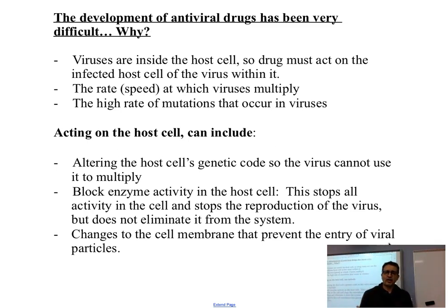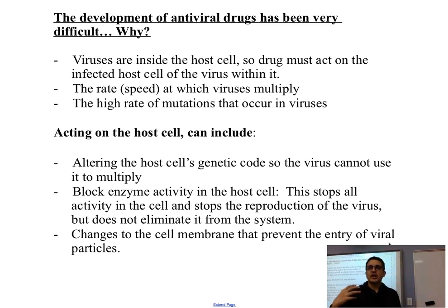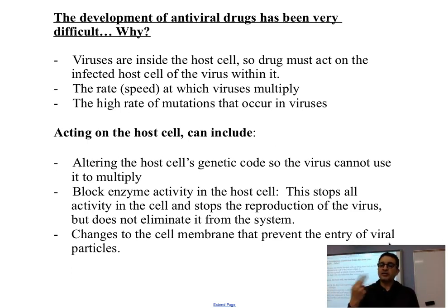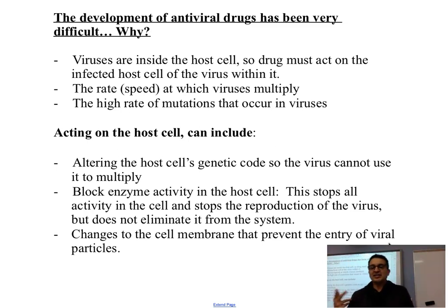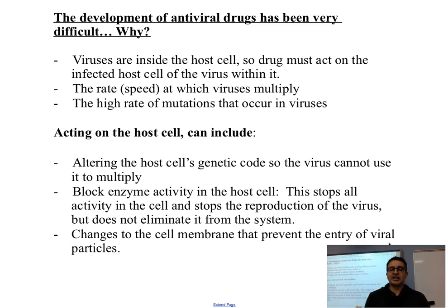What have we done to try to get antiviral drugs to work? One approach is to modify the genetic code in the host cell in order to stop it from being able to read the genetic code from the virus, and therefore stop it from hijacking the machinery. A second way is to stop the enzymatic activity in the host cell so it no longer has activity and stops the virus from acting. This is not great because you are telling your cells to stop working — it stops the virus from reproducing, but does not get rid of it. The virus is just trapped inside that cell.